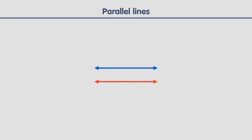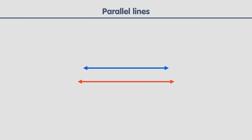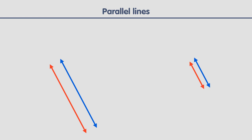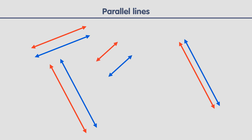Parallel lines are those that never intersect. Even if we extended them forever, they would never cross or even get closer together. For two lines to be parallel, they must point in exactly the same direction. All these lines are parallel.